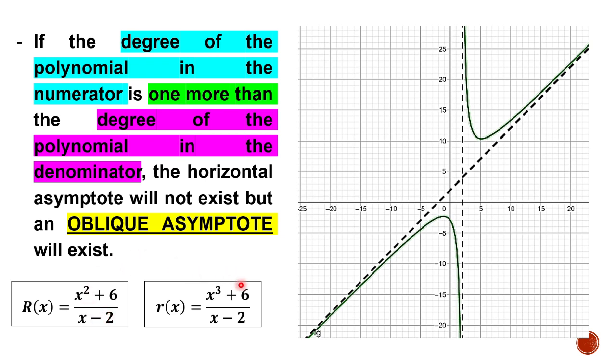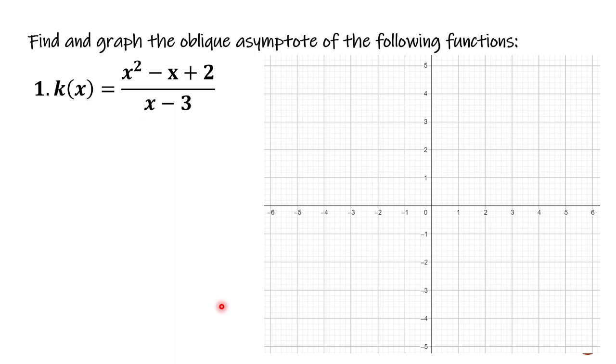If we divide that function, the result will be quadratic, and quadratic has a graph of a parabola. The oblique asymptote is a straight line. Parabola is definitely not a straight line. So let's try to find and graph the oblique asymptote of the following functions.